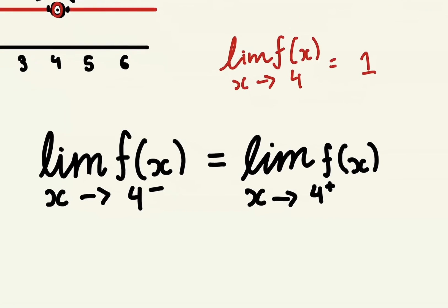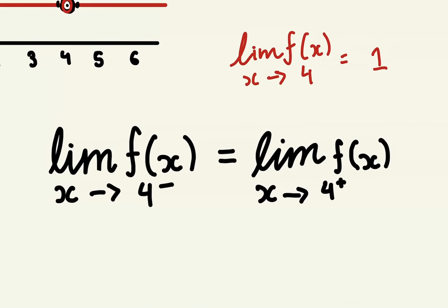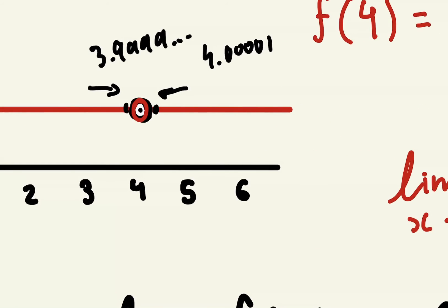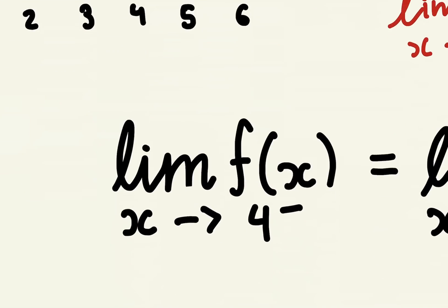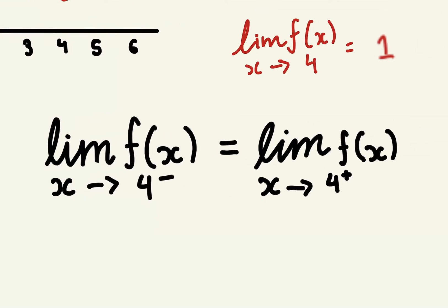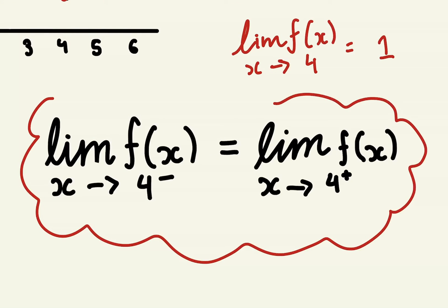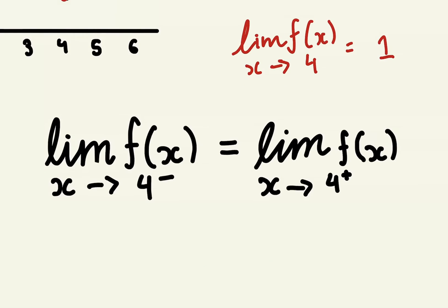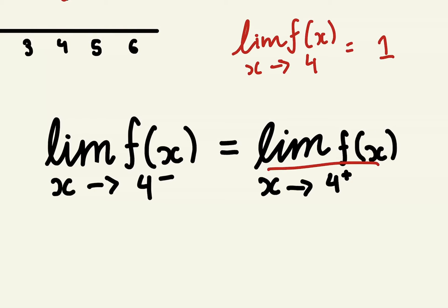When figuring out limits, one key thing to understand is that the limit has to be the same from the left and from the right. As we saw, it's approaching the same y-value of 1 from both sides — that's really important for a limit to actually exist. This notation states that the limit of f(x) as x approaches 4 from the left equals the limit of f(x) as x approaches 4 from the right.